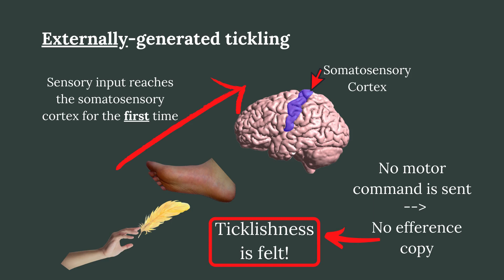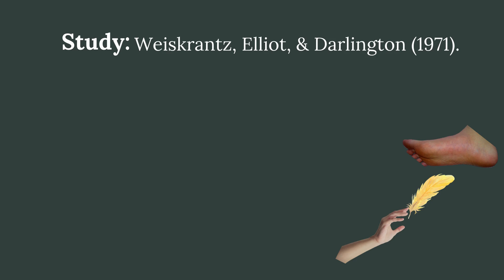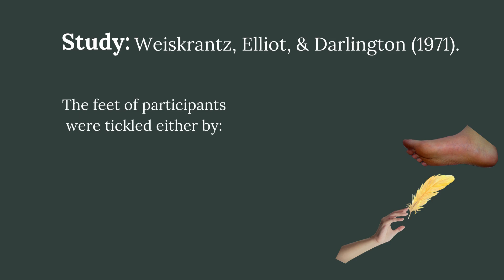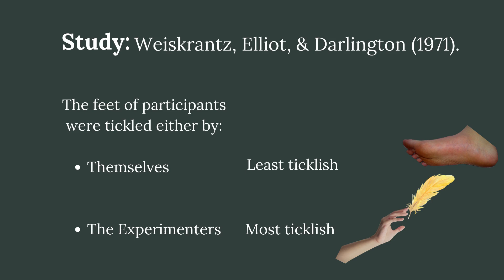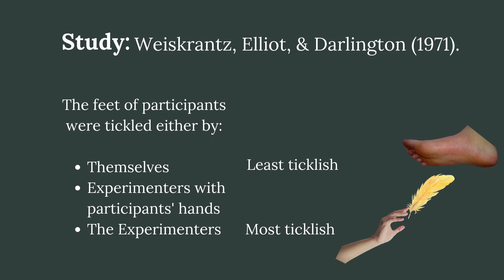Thus far we have explained why it is possible for us to tickle each other but not ourselves, and how this is related to efferent copies and the somatosensory cortex. It is also interesting to look at a study conducted by Weisgrens and colleagues. Participants had their feet tickled either by themselves or by the experimenter. As predicted, participants were more ticklish when tickled by the experimenter. However, there was a third condition in which the experimenter tickled the participant's foot using the participant's own hand. In this condition, participants felt more ticklish than when they tickled themselves, but less ticklish than when the experimenter tickled them directly.